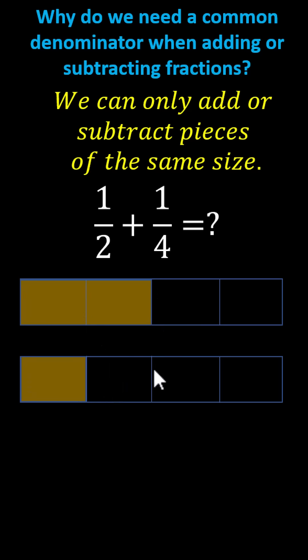Notice now the pieces are the same size, where each piece is equal to one-fourth of one whole, and now we can count the pieces. We have one, two, three pieces of size one-fourth, meaning one-half plus one-fourth equals three-fourths.